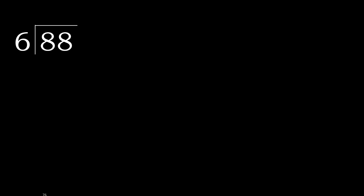88 divided by 6. Starting with 8 — 8 is not less, so we work with 8. 6 multiplied by which number is nearest to 8 but not greater? 6 multiplied by 2 is 12, which is greater. 6 multiplied by 1 is 6, which is not greater.